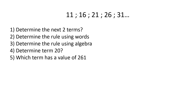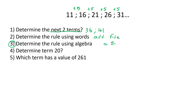Here we can see that we are adding five each time. Write down the next two terms: 31 plus five is 36, and 36 plus five is 41. The rule in words: add five. For the algebraic rule, the number we're adding is five, so we put 5N. Then we figure out the number before the sequence — that would be six, because six plus five is 11. So TN = 5N + 6.